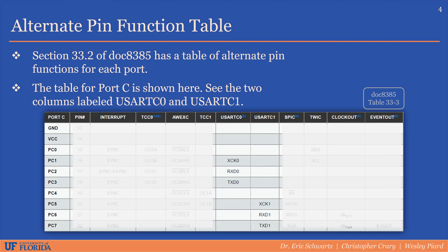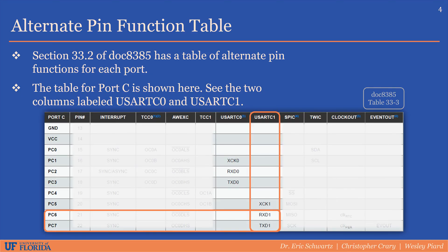This table is from the Alternate Pin Function section of the DOC 8385 manual. In this example, we're looking at which pins are for the UART modules on port C. These tables are your best reference for determining which physical pins are utilized for a given peripheral. For USART C0, RX is connected to pin 2 on port C and TX is connected to pin 3 on port C. Similarly, for USART C1, RX is connected to pin 6 on port C and TX is connected to pin 7.